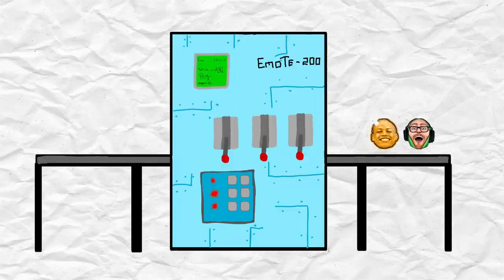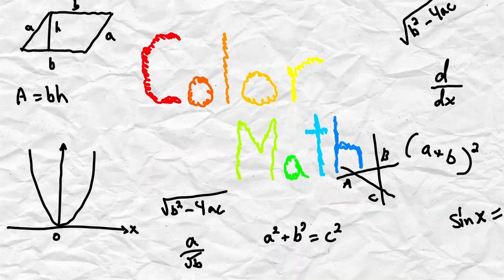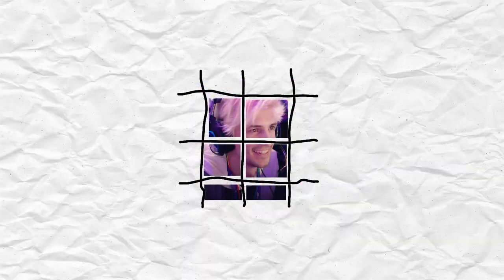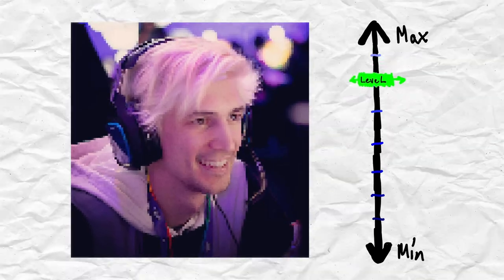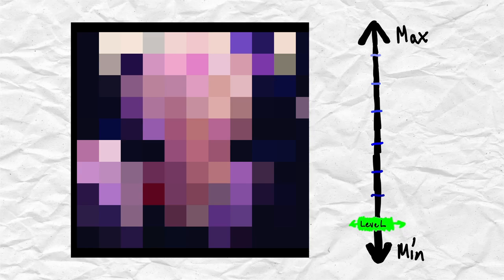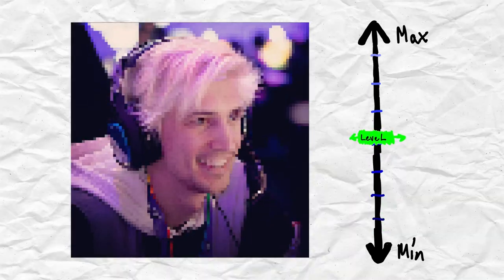To make a bot that replaces pixels with images, we're going to need to do some color math. We're going to have to first split the picture into chunks. We can go with super small chunks, but it's going to be really hard to see the difference. Or we can go with really big chunks, but the actual image will start to be lost and it'll just look like a pixel grid. So for now, let's just go somewhere in the middle.